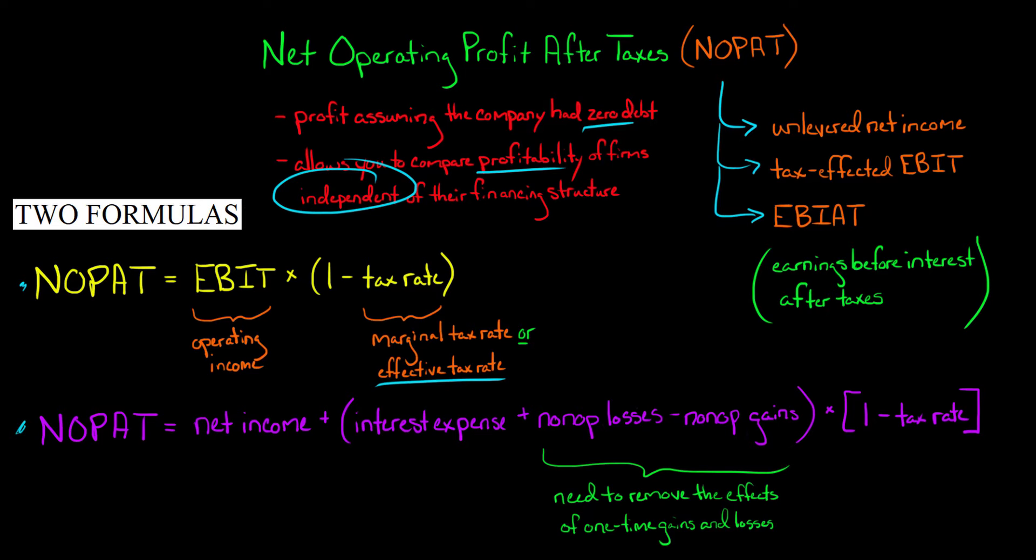A slightly harder way to calculate NOPAT is to take the company's net income and make some adjustments to it to arrive at the NOPAT. We'll still get the same NOPAT, it's just a little more work. So if we take the company's net income, and then we add to it the company's interest expense plus non-operating losses minus any non-operating gains times one minus the tax rate, this whole thing here, we add that to the company's net income, that will give us NOPAT.